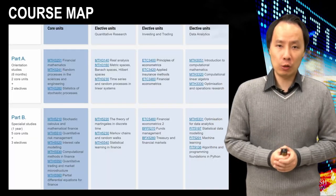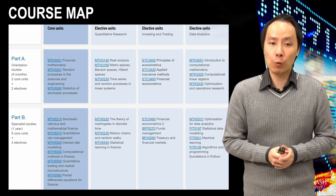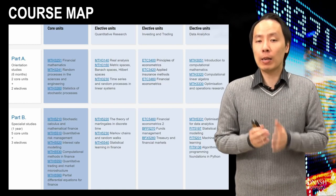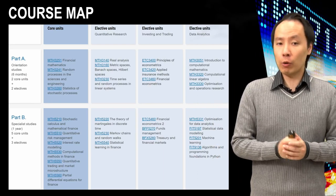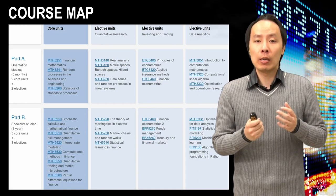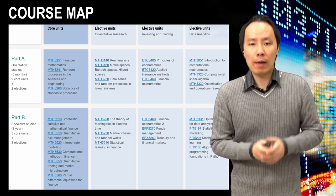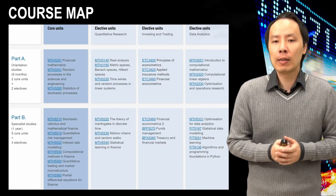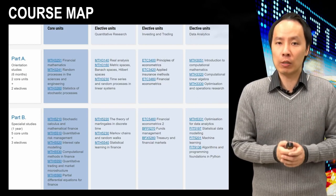Here's a table showing some of the units we have. Both part A and B have core units we recommend everyone take to complete the course, but there is also room to choose some electives. We have categorized the electives into three broad categories: quantitative research, which covers more of the mathematics behind what we do; investing and trading, for those interested in finance, business and economics; and data analytics, for those interested in computer science fields such as machine learning and AI.